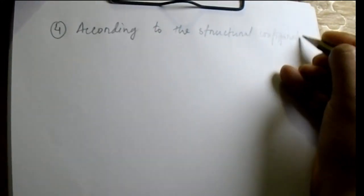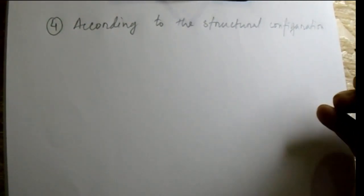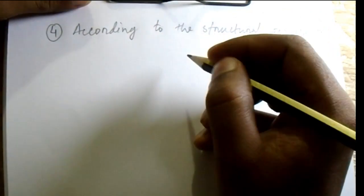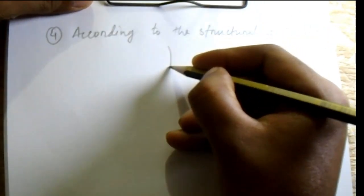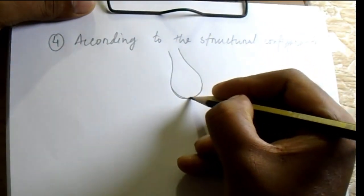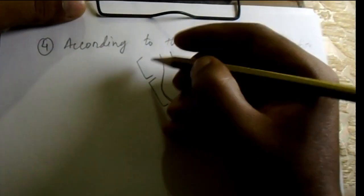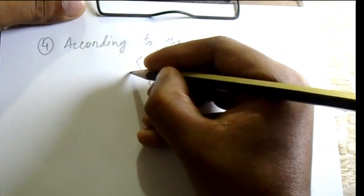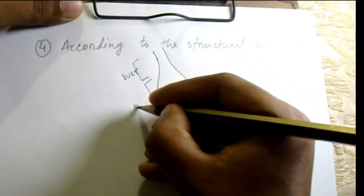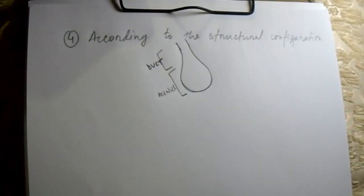Now we will learn another classification — according to structural configuration. Before discussing the types, let's recapitulate one thing: if we consider a portion of the parenchyma, there is a secretory portion and an excretory portion. The excretory portion is termed the duct, and the secretory portion is termed the acinus.